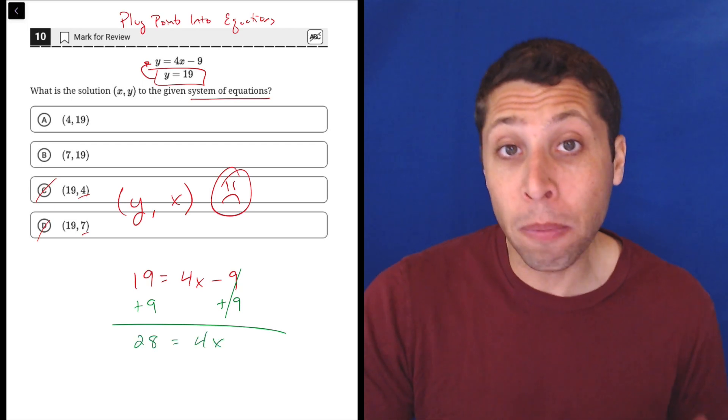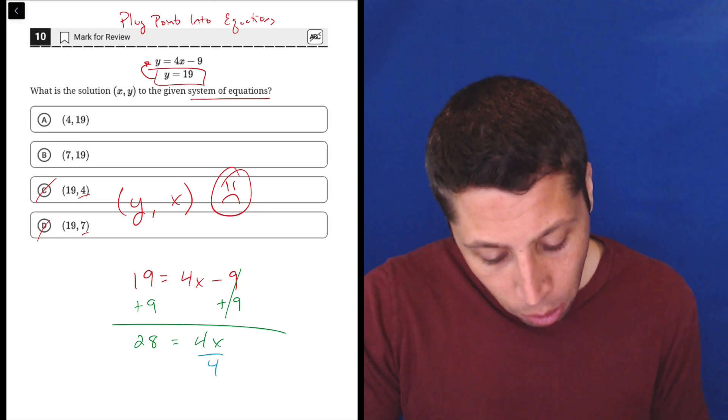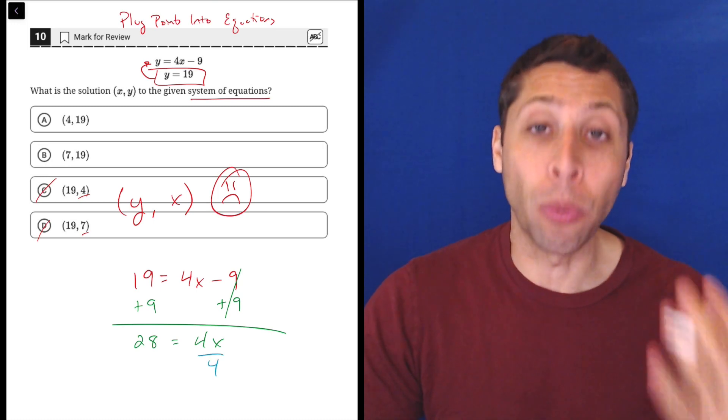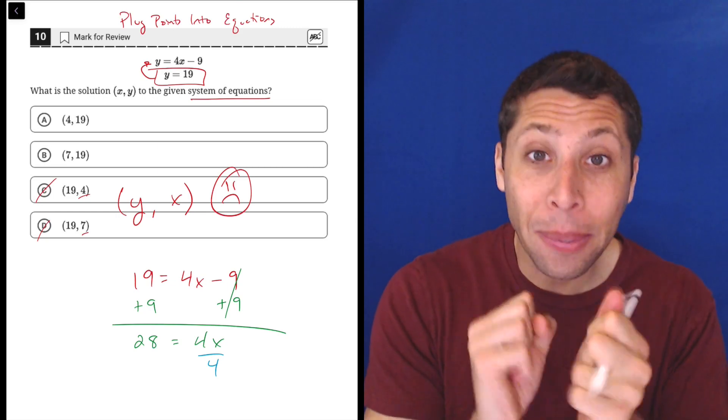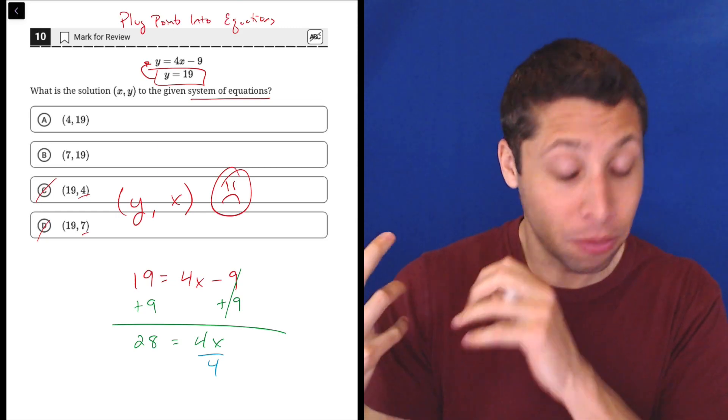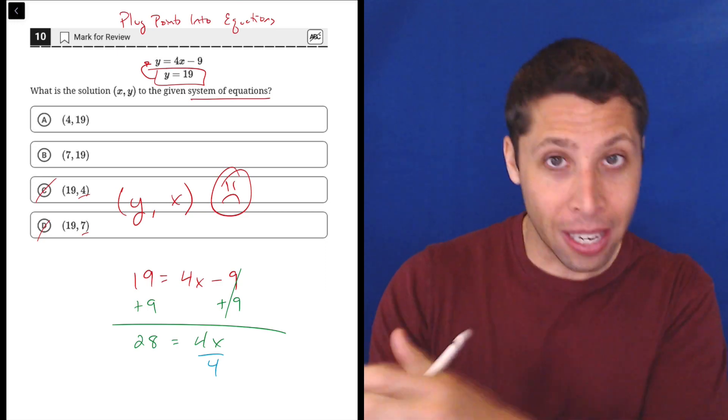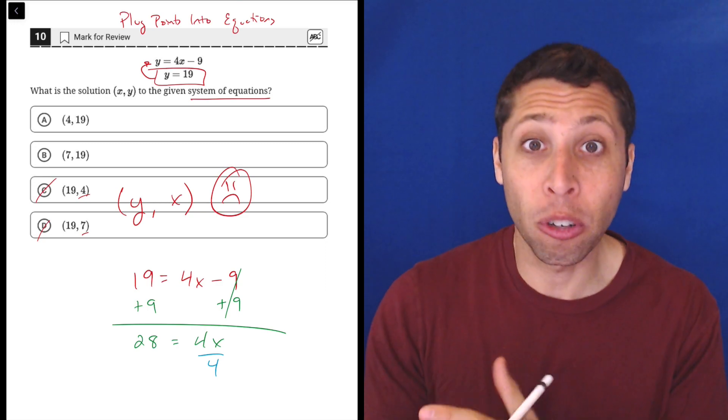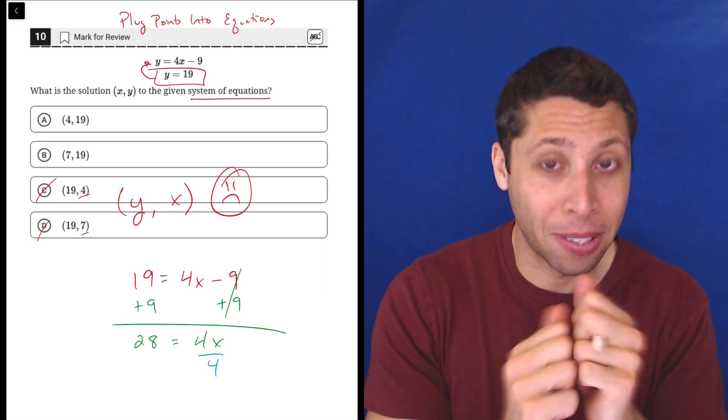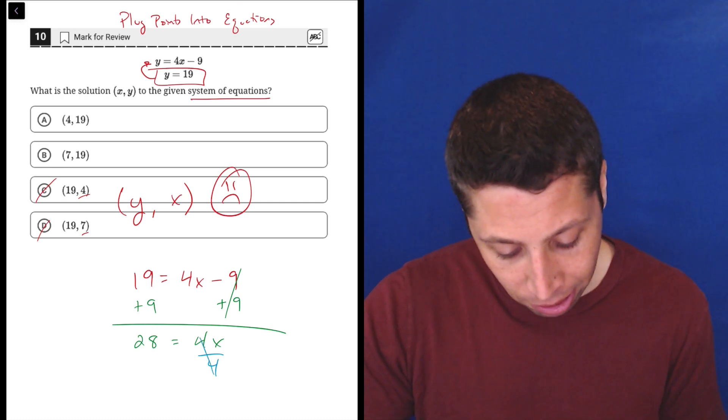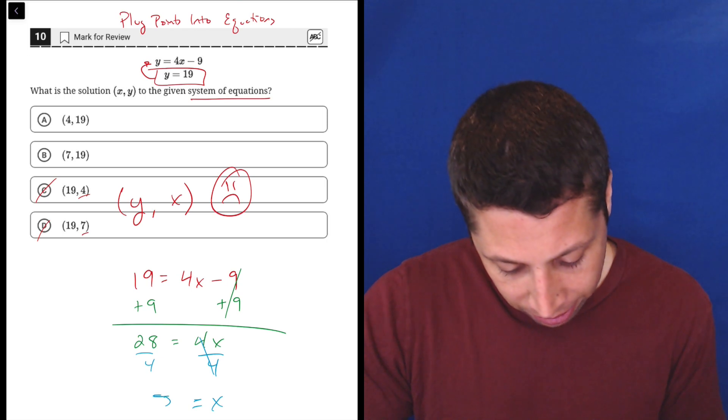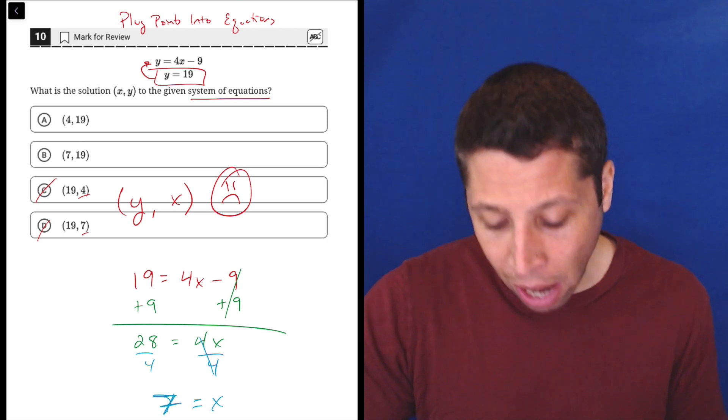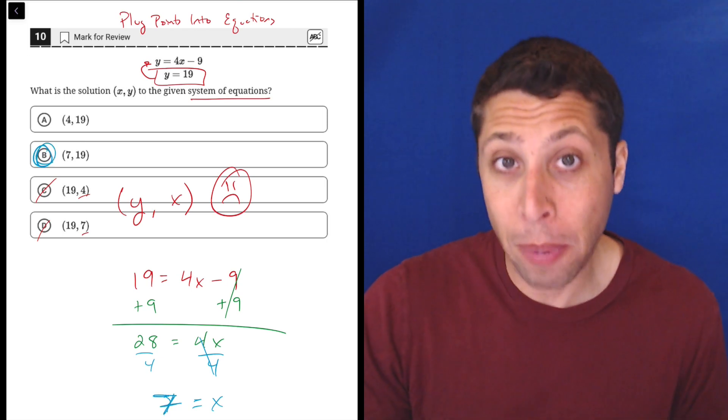And now we do division because we want to get the four off of the x. So we have four times x, to get rid of multiplication, we do division. Notice that whenever we do algebra, there's a lot of opposites going on. What gets rid of subtraction? We did addition. What gets rid of multiplication? We do division, opposites. So that gets us x alone. But when we divide 28 by four, we get seven. And so now x is seven, that only works with choice B. So that's the answer.